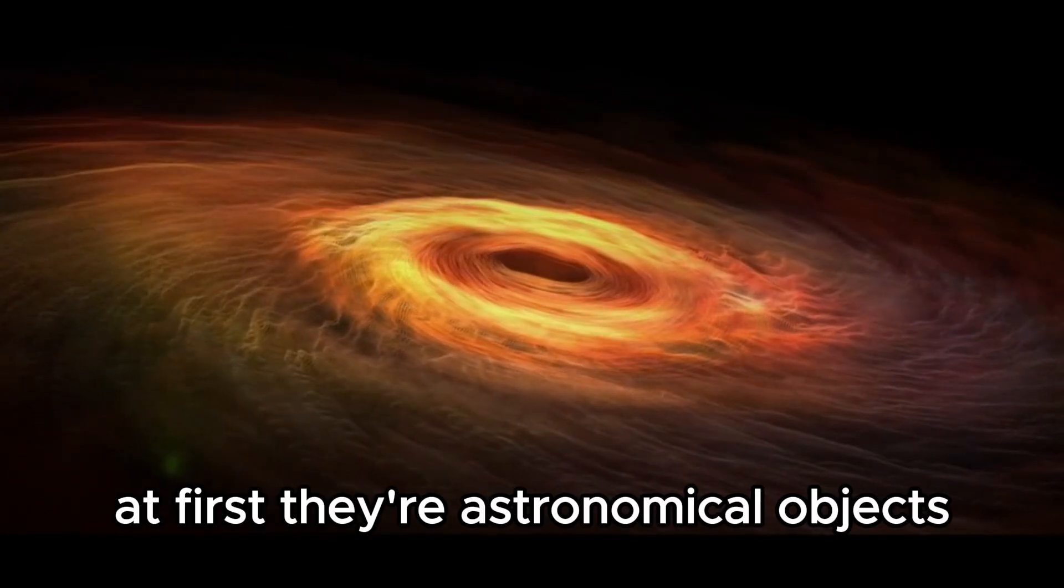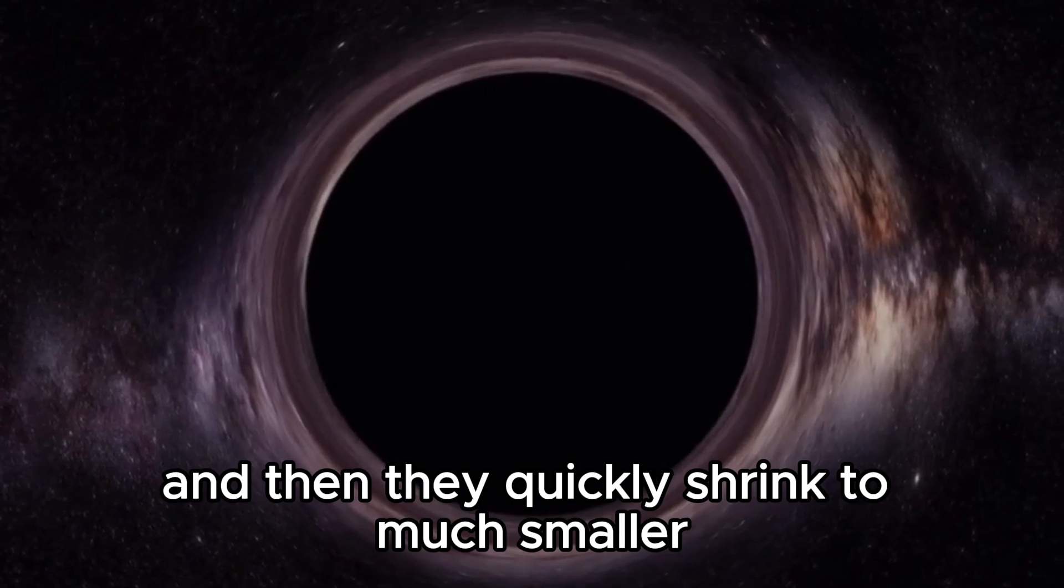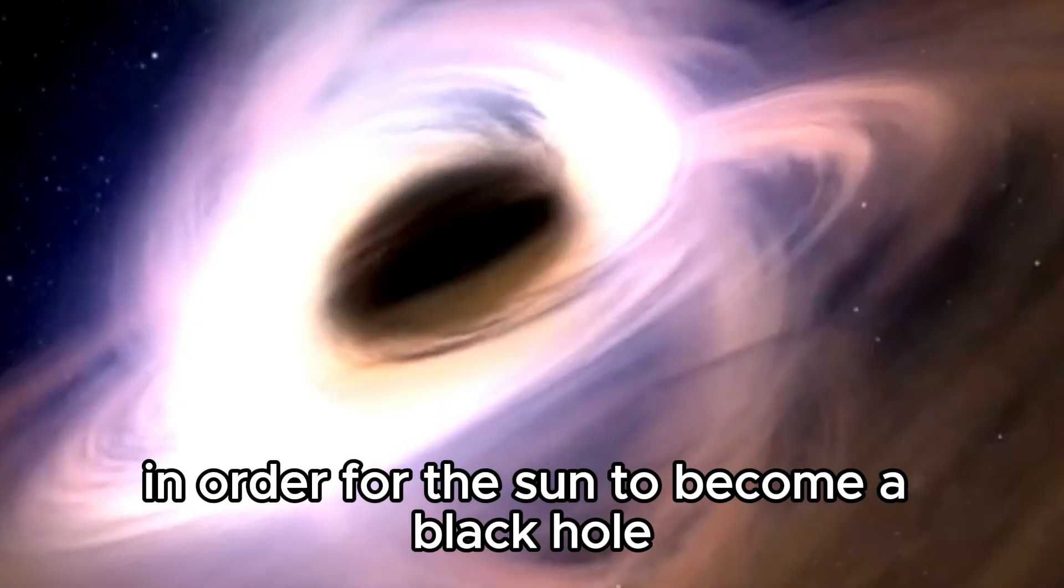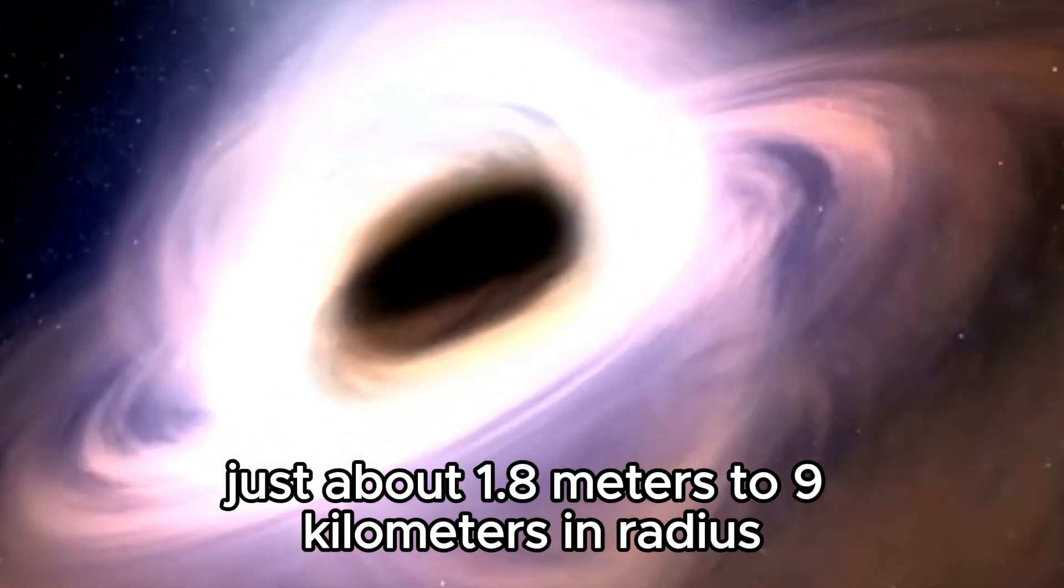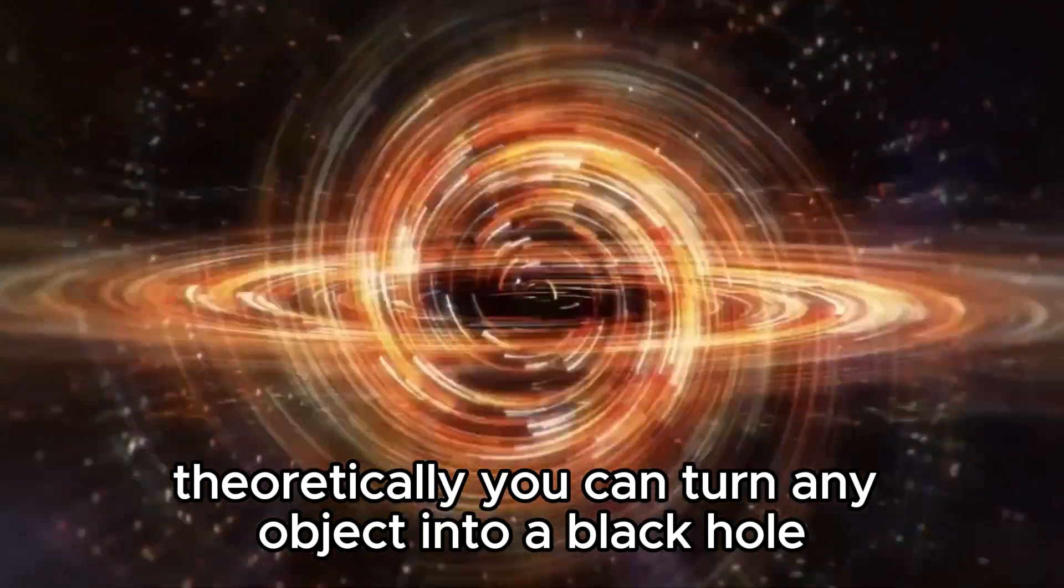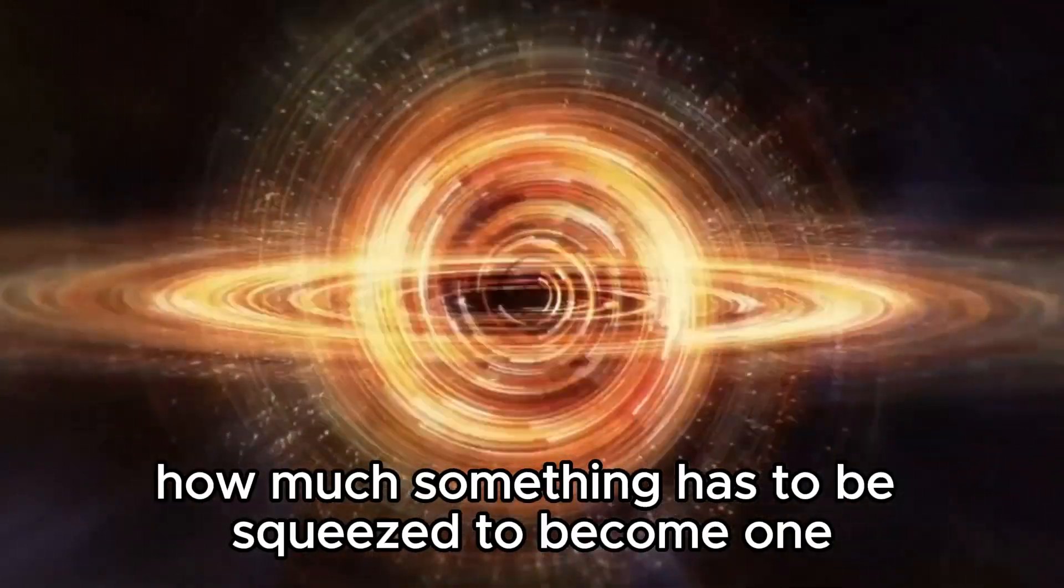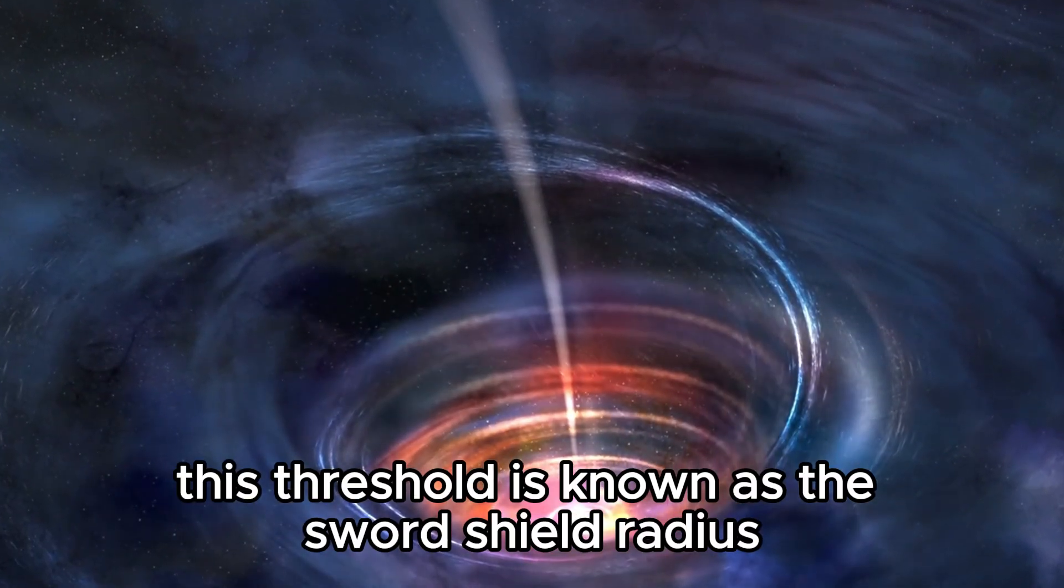At first, they're astronomical objects, large stars, and then they quickly shrink to much smaller, sometimes quantum sizes. For example, in order for the sun to become a black hole, it would have to be squeezed to the size of just about 1.8 meters to 9 kilometers in radius. Theoretically, you can turn any object into a black hole. There's a formula that tells us how much something has to be squeezed to become one. This threshold is known as the Schwarzschild radius.